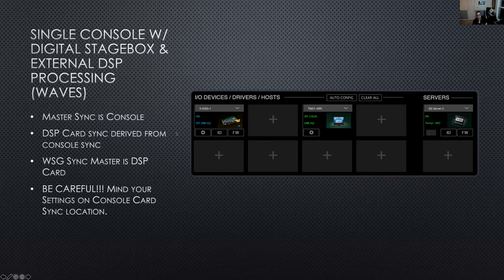What that means is that while the DSP card is the master of the SoundGrid ecosystem, it is actually seeing its clock source from the console. The overall thought and thread here is that we are still looking at a single point from which the master clock source is derived and ultimately distributed down the line. So that's about all I'm going to get into as far as word clock basics, fundamentals, and how to distribute with simple and then slightly more complex ecosystems.